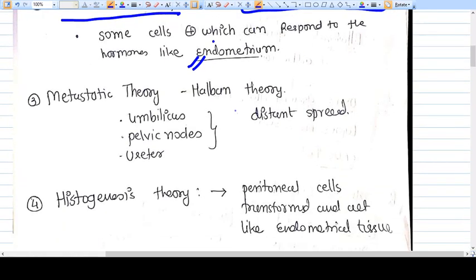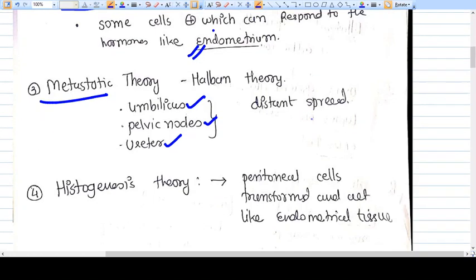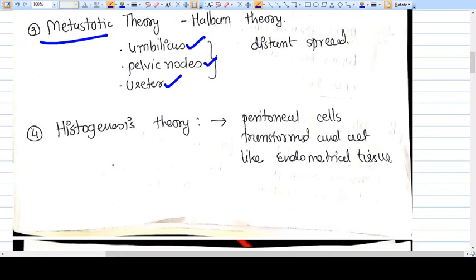The third theory is the metastatic theory, which explains why endometrial tissue travels to distant organs like the umbilicus, pelvic nodes, and ureter. Just like tumor spread, endometrial cells are transported through blood to these sites. This is the metastatic theory.